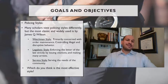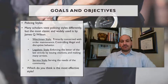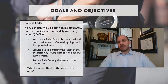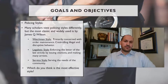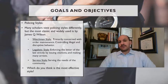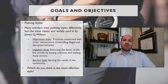This leads into the idea of policing styles, which comes from James Q. Wilson, a famous political scientist who wrote extensively about criminal justice and policing. He's probably most famous for co-authoring broken windows theory, but he also authored material about the different styles of policing.